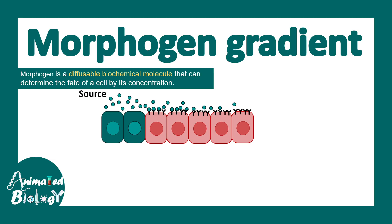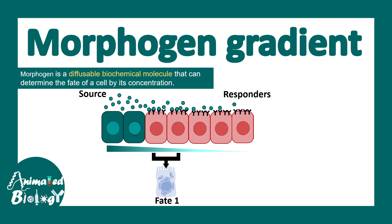The source cell in green secretes several molecules shown by green dots that can be received by nearby responder cells which would be patterned eventually. The concentration of molecules is higher towards the source than towards the end of the responders, and based on this concentration there could be different outcomes in cellular fate — fate number one, fate number two, or fate number three — all depending on the morphogen concentration and the signaling it evokes.